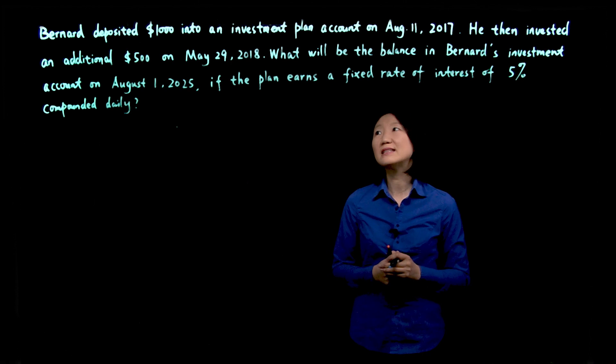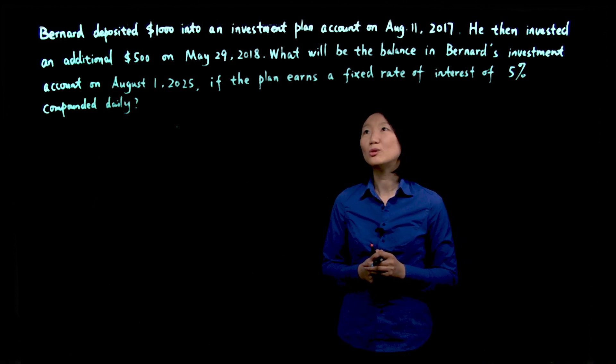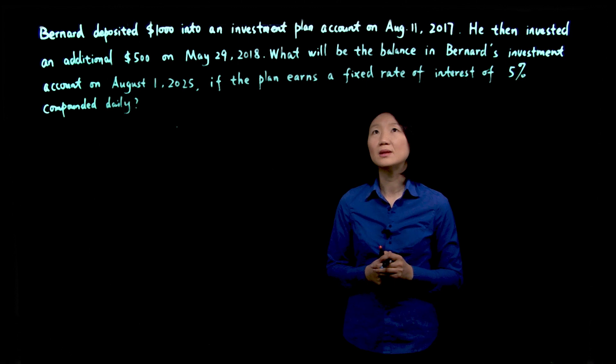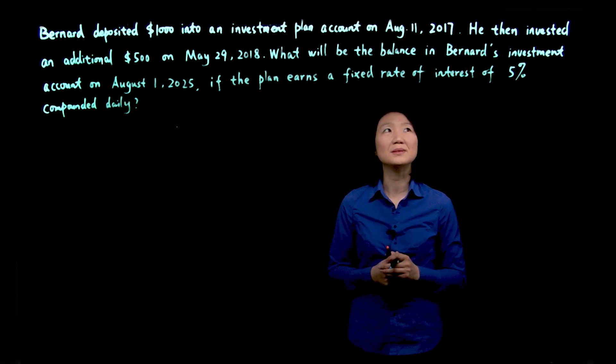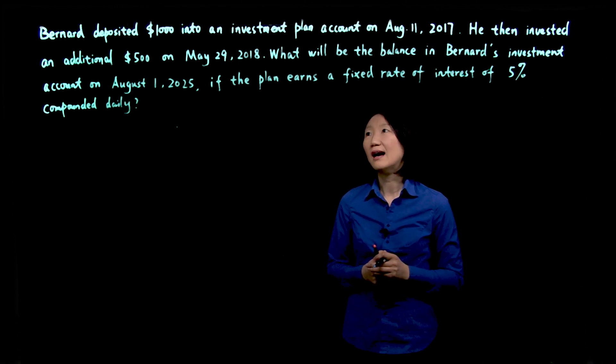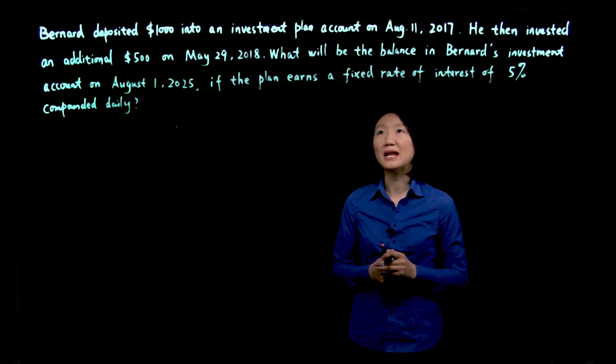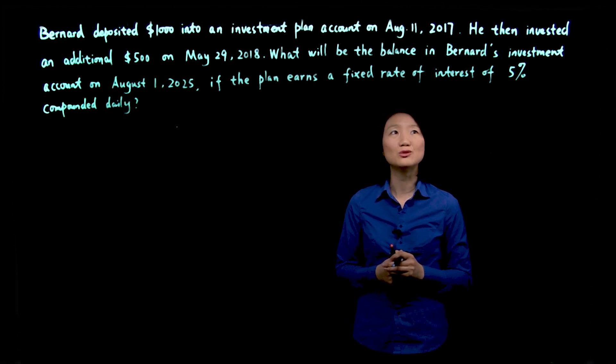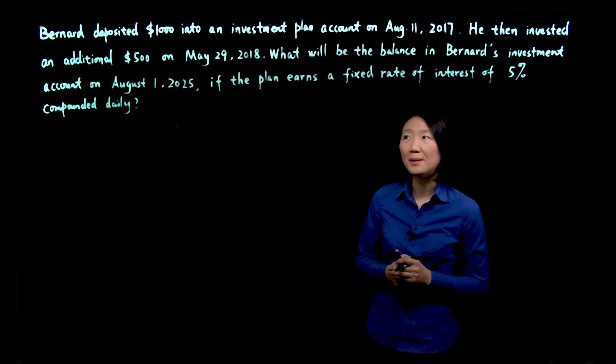He then invested an additional $500 on May 29, 2018. What will be the balance in Bernard's investment account on August 1, 2025, if the plan earns a fixed rate of interest of 5% compounded daily?